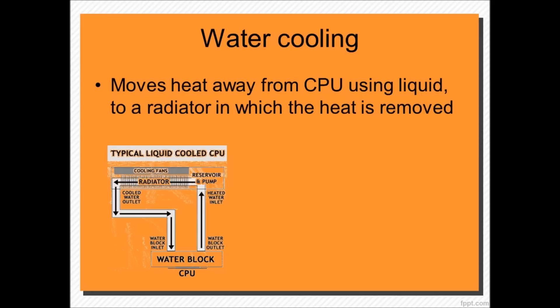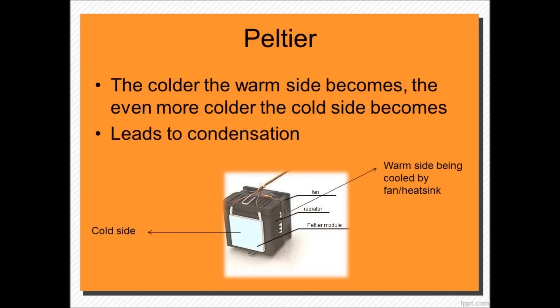Now Peltier cooling. Peltier is what you get in a fridge — it's a small block which, with the addition of electricity, becomes hot on one side and cold on the other. By adding a heatsink, we can make the hot side cooler. The cooler you make the hot side, the colder the cold side becomes.